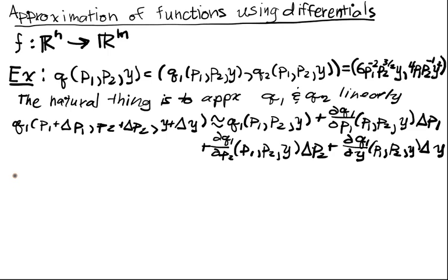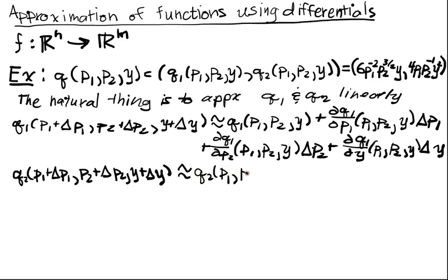What's our linear approximation for Q2? Q2 of P1 plus delta P1, P2 plus delta P2, the third argument is Y plus delta Y and I want to look at that approximation. I'll have Q2 of P1, P2, Y.